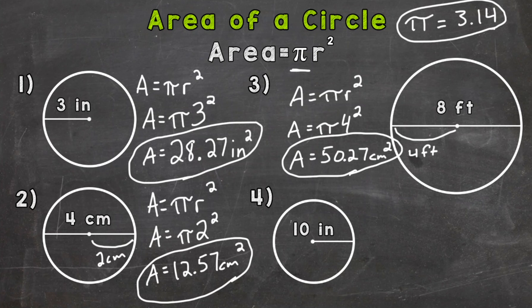So for number four here we are given a radius of 10 inches so we do not need to take half of that because again that is the radius. You only take half when you have the diameter. You divide that by two in order to get the radius. So let's start by writing out our formula of area equals pi r squared.